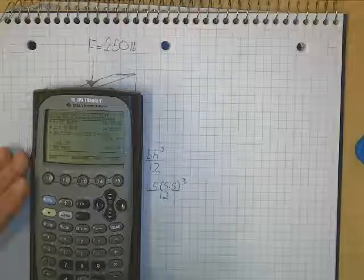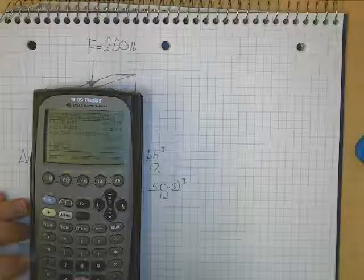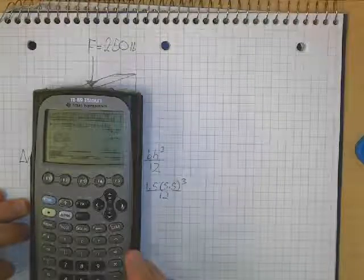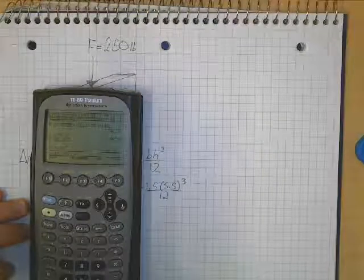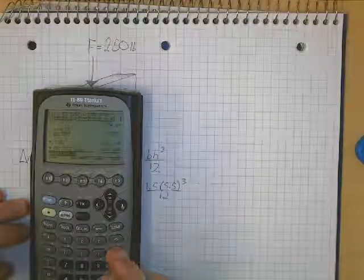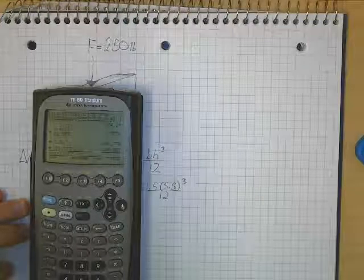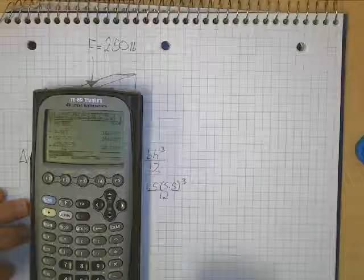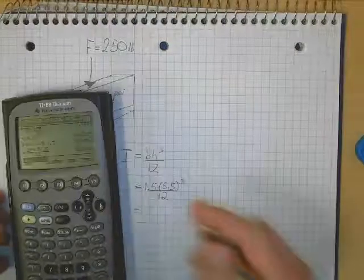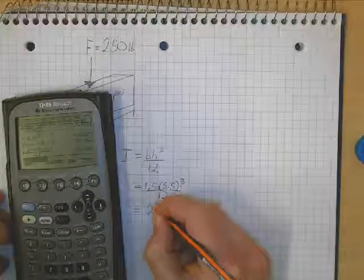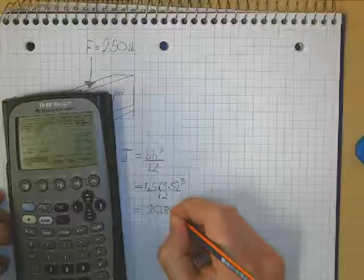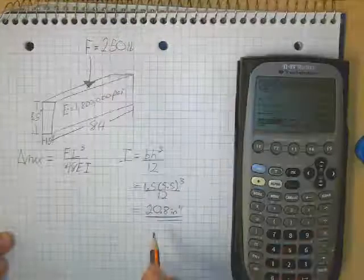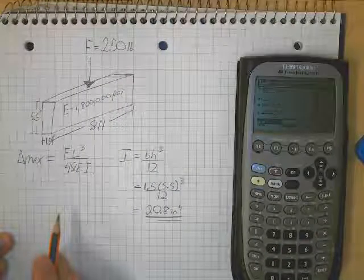I like to work backwards, so to speak, so I'm going to do 5.5 cubed, and hit enter, and then take that times 1.5, and then I'll take all of that divided by 12. And I get 20.79. So let's just call that 20.8. So now I can use that in my next equation.